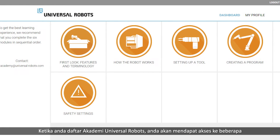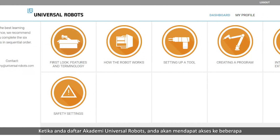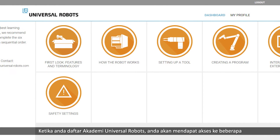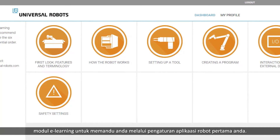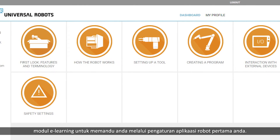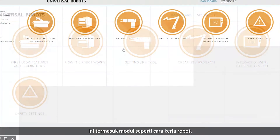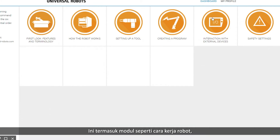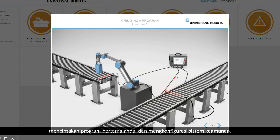Once you've signed up to the Universal Robots Academy, you'll have access to a number of e-learning modules to guide you through setting up your first robot application. These include modules such as how the robot works, creating your first program, and configuring the safety system.